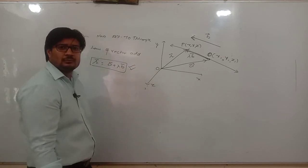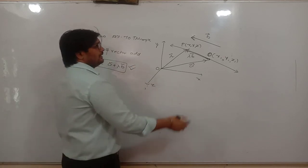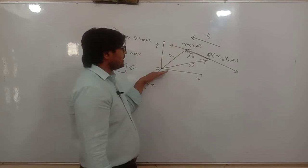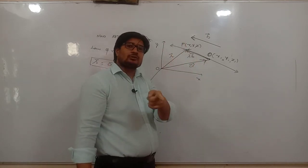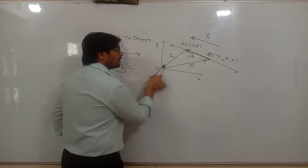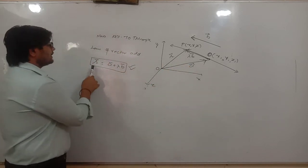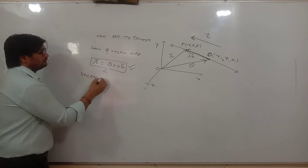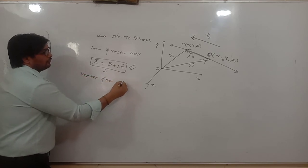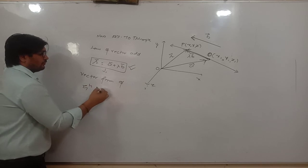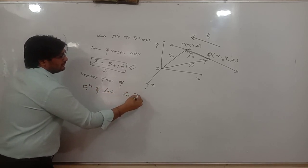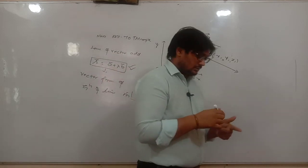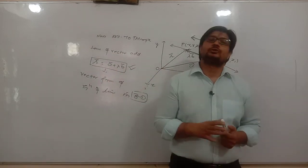This one is the equation of a line in 3D. Equation of line in vector form. Clear?